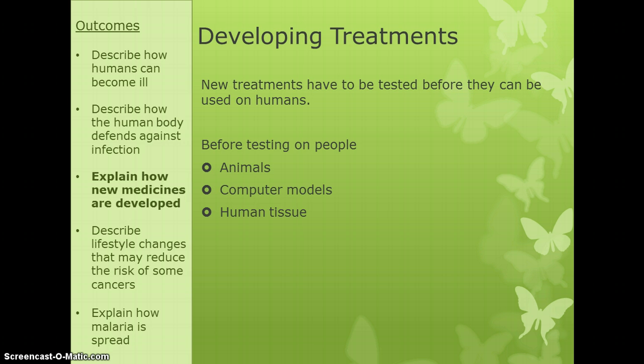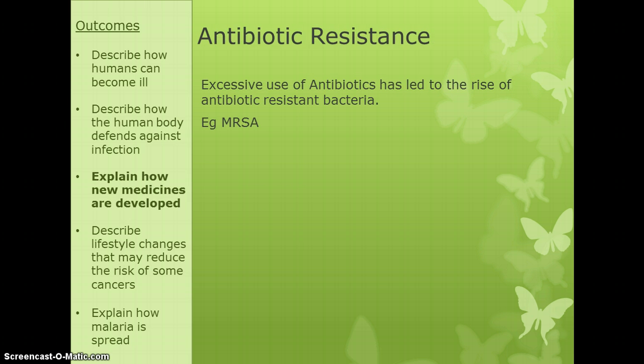When developing treatments, they have to be tested before being used on people. Before human trials, drugs are tested on animals, computer models, and samples of human tissue. There are ethical reasons why you don't just test an unknown drug on a person — it could do more harm than good.